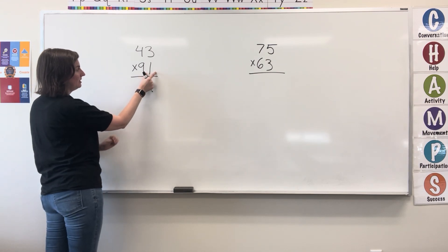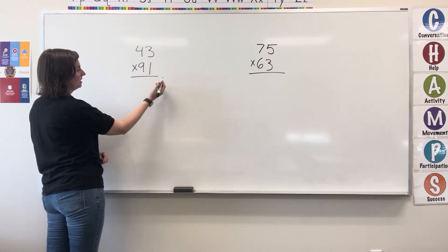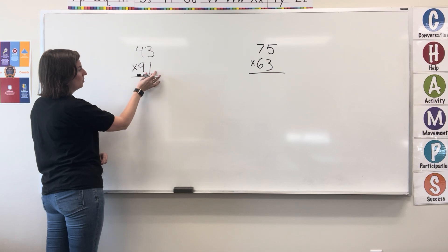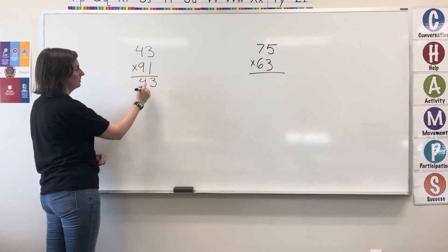Digit in the ones place on the bottom, 1 times 3 equals 3, write the 3. 1 times 4 equals 4, write the 4.